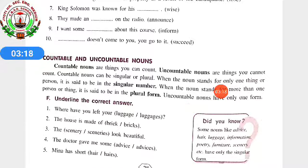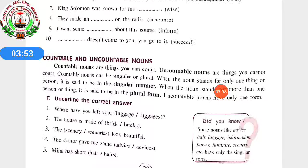Countable nouns are things you can count, and uncountable nouns are things you cannot count. We have learned this earlier also. Countable nouns can be singular or plural. Like for example, 'pen' — if I say 'a pen', it is only one pen. But 'ten pens' means pens — plural — but ten I said. Can we count ten? One, two, three... ten. Yes, we can count ten. That's why it will be a countable noun, and it can be singular or plural.